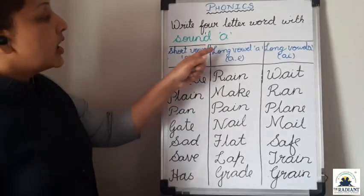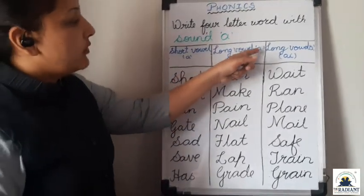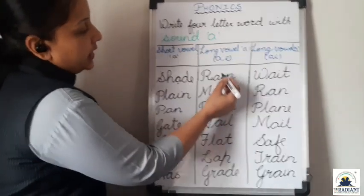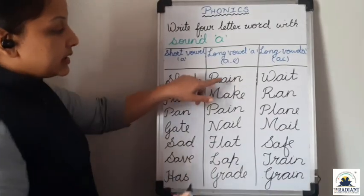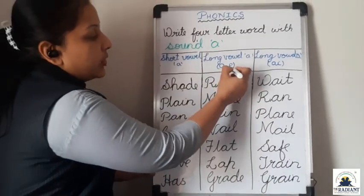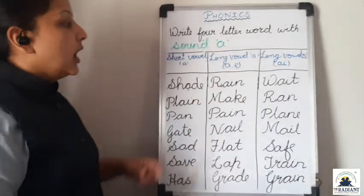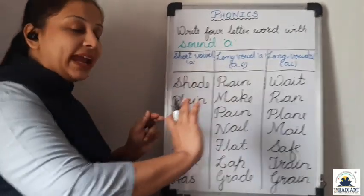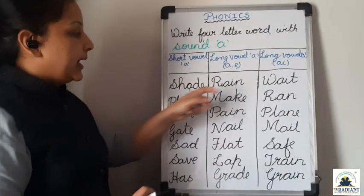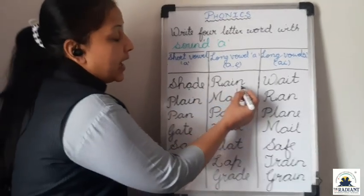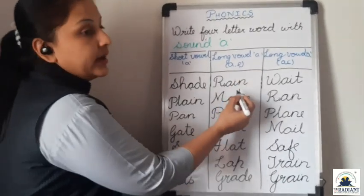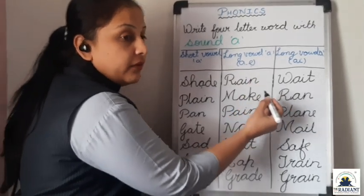Now the next — Long vowel A. In long vowel A, there is an A but no E here. Then also we have to add the sound of E. We have to use the sound of E where A is there. R, A, I, N — Rain.